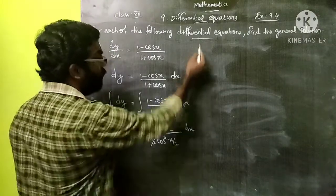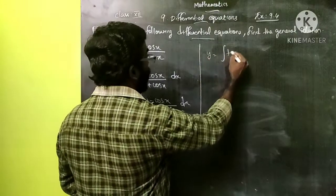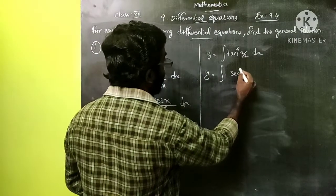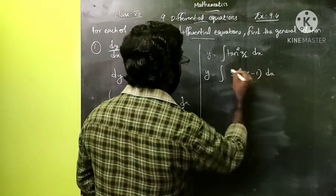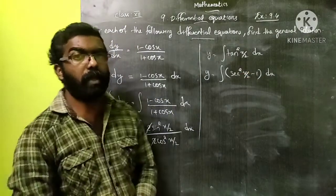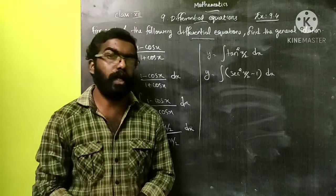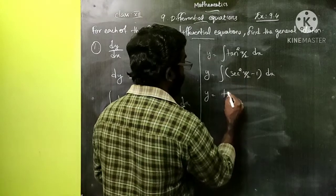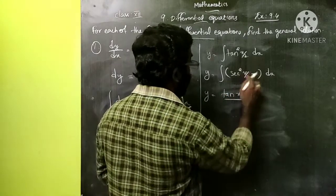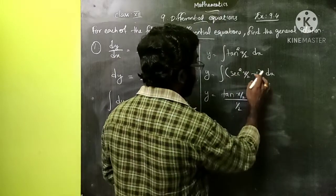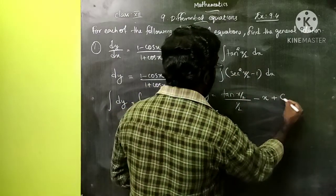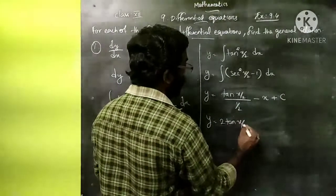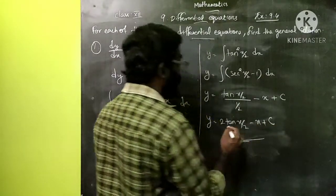The 2 and 2 get cancelled, giving y = integral of tan²(x/2) dx. That is y = integral of (sec²(x/2) - 1) dx, since tan²x = sec²x - 1. Now applying the formula, integral of sec²(x/2) gives tan(x/2) divided by the derivative of x/2, which is 1/2, then minus integral of 1 dx. So y = 2tan(x/2) - x + c. This is the general solution.